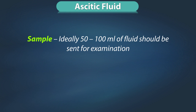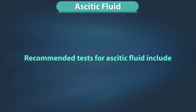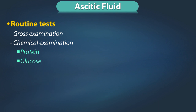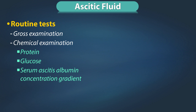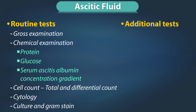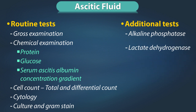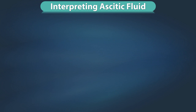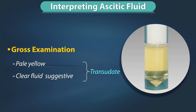The classification into transudates and exudates is not well defined for ascitic fluid. Ideally 50 to 100 ml of fluid should be sent for examination. Recommended tests include gross examination, chemical examination for protein, glucose, serum-ascites albumin concentration gradient, cell count including total and differential count, cytology, culture and gram stain. Additional tests include enzymes like alkaline phosphatase to check intestinal injuries, lactate dehydrogenase in suspected malignant effusion, creatinine and urea to differentiate peritoneal fluid from urine, and ammonia levels in suspected cases of perforated peptic ulcer, ruptured appendix, or intestinal strangulation.